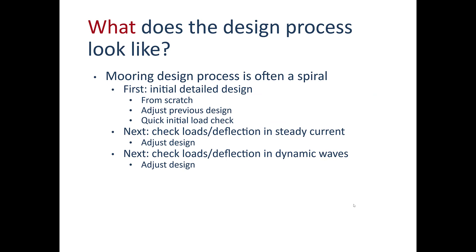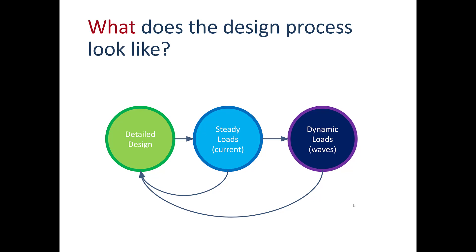Invariably the mooring design process is a design spiral. You start off with an initial design — either from scratch or using a previous design you can adjust — and you often need quick initial load checks on the mooring. After this, you check what happens in a steady current and possibly make adjustments. Finally, you check loads and deflections in dynamic conditions like ocean waves and may make more adjustments. This flowchart shows that at any point you may cycle back: from detailed design to steady load checking and back, then through dynamic load checking and back again.